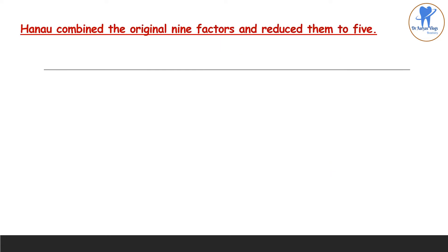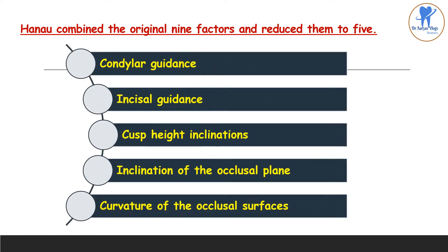Hanau combined these original nine factors and reduced them to five factors, that is Hanau's quint. The five factors are: condylar cadence, incisal cadence, cusp height inclinations, inclination of the occlusal plane, and curvature of the occlusal surfaces.